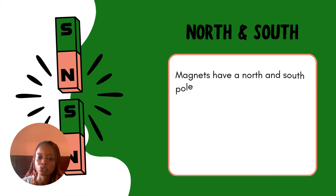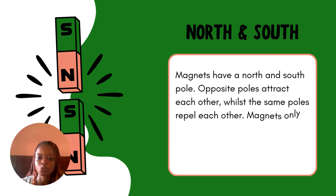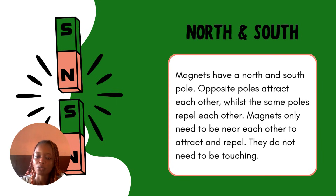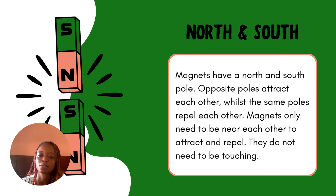All magnets have what we call north and south poles, as you can see displayed on the screen. Opposite poles attract each other while same poles repel each other. When we talk about opposite poles — that's south and north — the south of one magnet will attract the north of the other magnet. But when both poles are the same, like south to south, they repel each other.